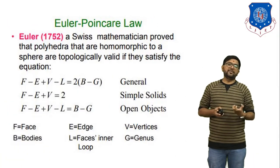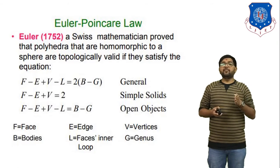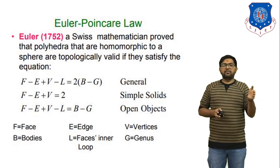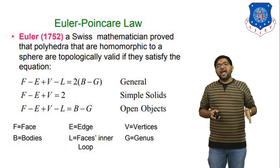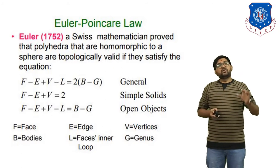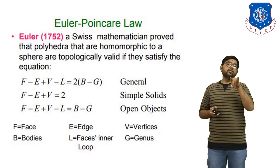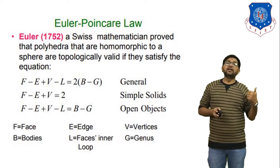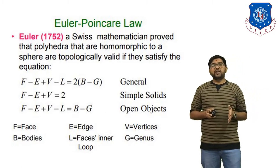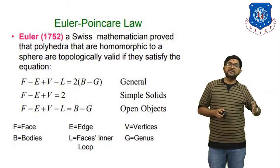Now let us understand Euler's law. For the general solid model, the equation is: F minus E plus V minus L equals 2 times B minus G. For a simple solid, we have a simpler equation: F minus E plus V equals 2. And for an open object: F minus E plus V minus L equals B minus G. Once we validate any object, if the left-hand side and right-hand side of the equation are equal, we can consider that object a complete solid model. In this equation, F is the number of faces, E is edges, V is vertices, L is loops, B is bodies, and G is genus (holes).